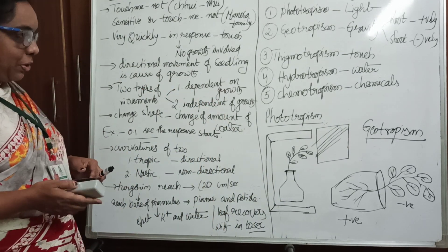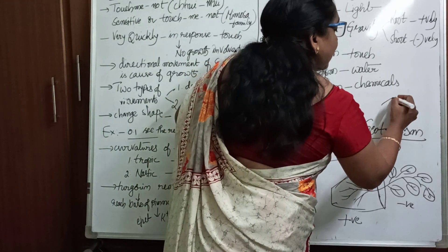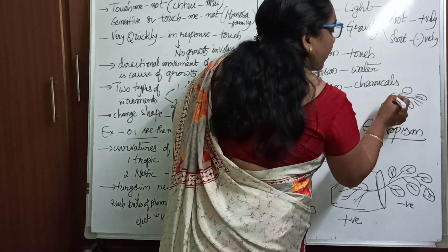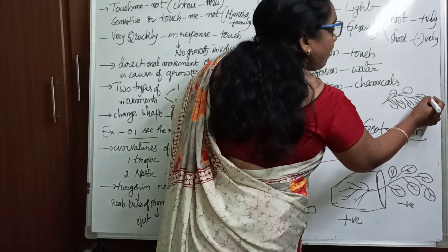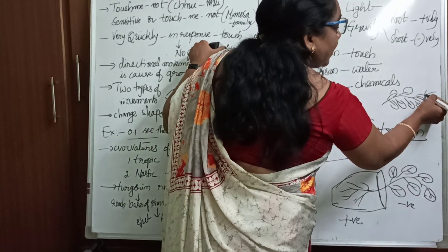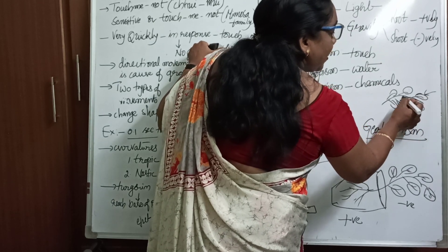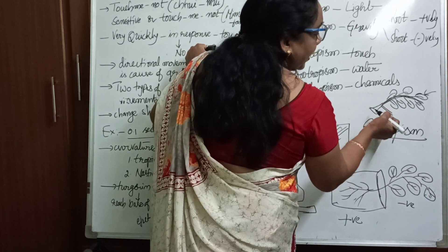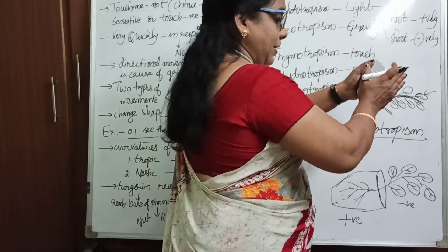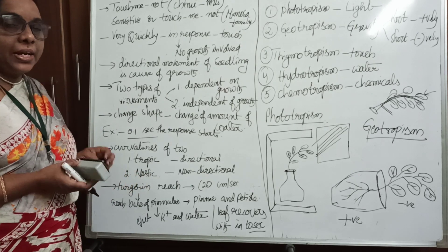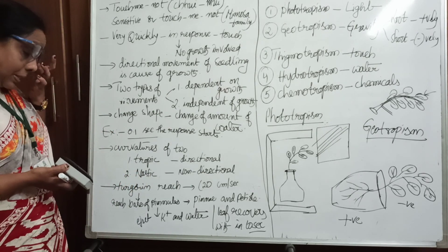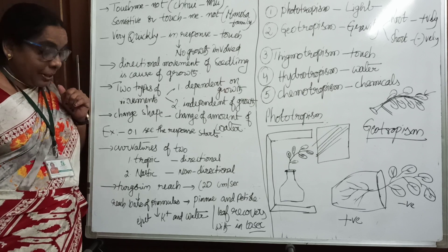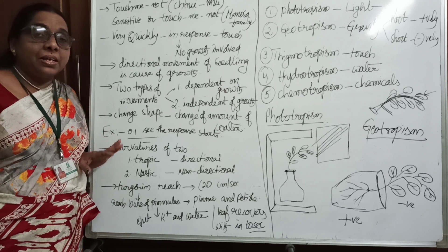Whenever this turgor chemical reaches the pinnules — which are the leaf leaflets — it goes to the rachis and then to the petiole. From the petiole, K+ ions and water are released out. Whenever the water comes out, the plant shows movement depending on water availability.